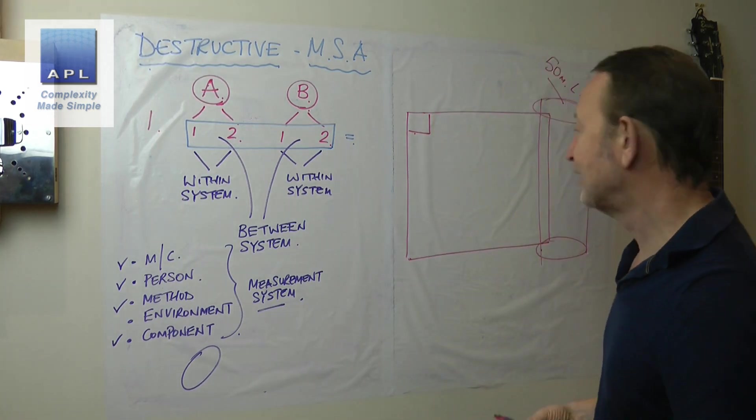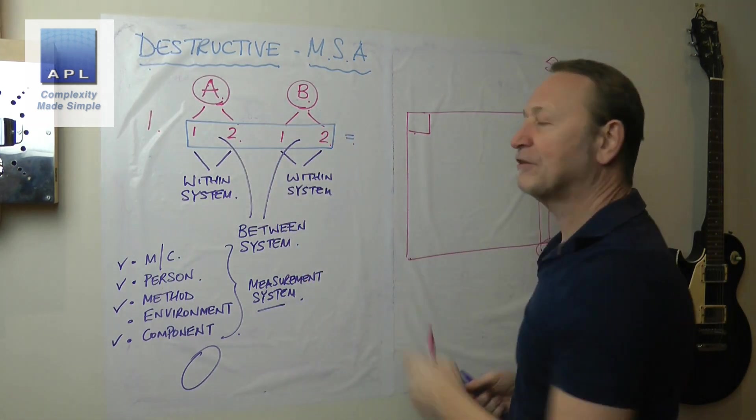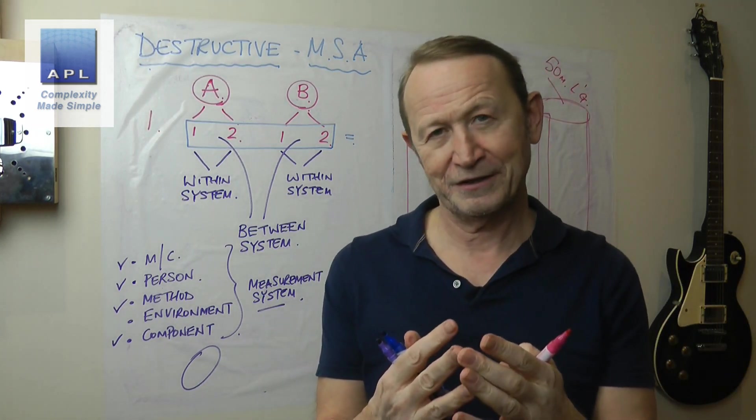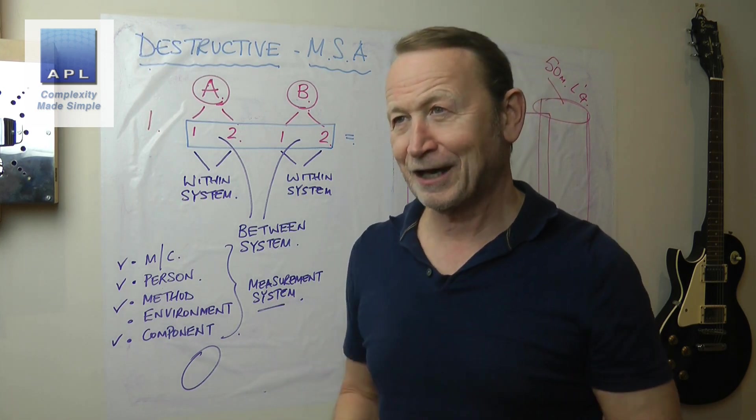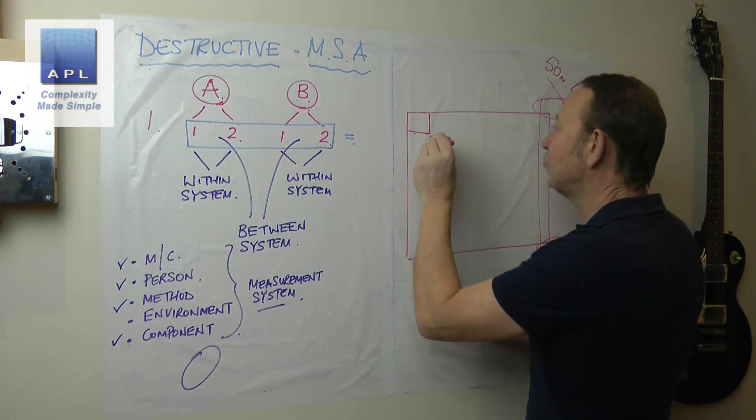So the question is, what do you do? What you've got to do is to take four pieces that are as similar to one another as they can possibly be. Now this is a difficult thing to do, and I know this doesn't sound particularly good. This is difficult.